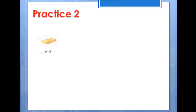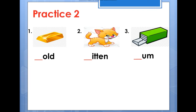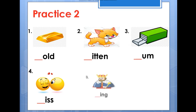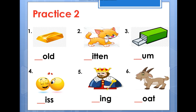Number one: gold, gold. Number two: kitten, kitten. Number three: gum, gum. Number four: keys, keys. Number five: king, king. Number six: gold, gold.